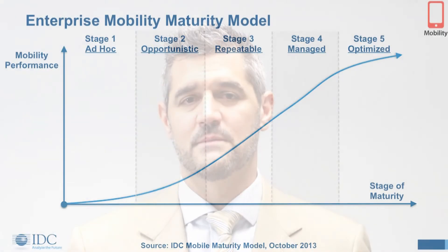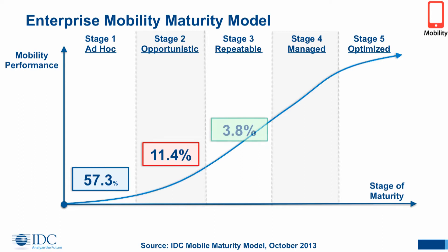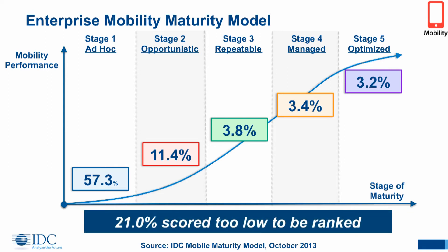So how did they score when we surveyed these people? Well, 57.3% came in at that very ad hoc earliest phase that don't even have a mobility strategy. When you go into opportunistic, it's only about 11% of the companies across the region. When you get to the repeatable, that more mature phase, it's nearly 4%, which is very low. And when you start looking at stages four and five, the managed and optimized phases, it's just over 3% in each. Believe it or not, 21% of the companies we surveyed were too low to even be ranked in the earliest phases of mobile maturity. So this is the challenge we face as an industry: how do we drive that forward?